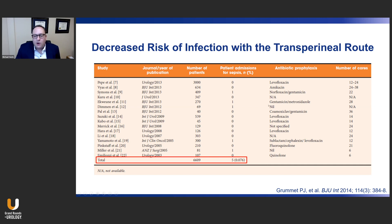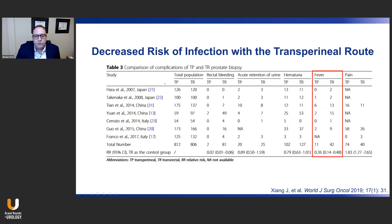Of note, almost all the patients included across these series still did receive antibiotics. When comparing directly the transperineal approach to the transrectal approach, as was done in a meta-analysis of case-control studies published in the World Journal of Surgical Oncology, the authors found a near five-fold reduction in the risk of infectious complications with the transperineal approach versus the transrectal approach. Again, in many of these studies patients still received antibiotic prophylaxis.